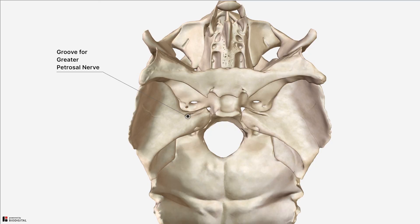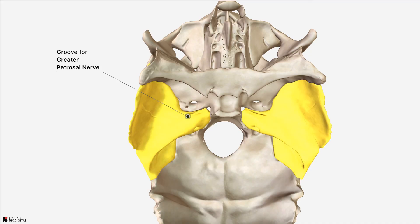Extending laterally and posteriorly from the foramen lacerum is this groove on the superior surface of the petrous part of the temporal bone, which is the groove for the greater petrosal nerve, which is a branch of the facial nerve. There is also a shallower groove for the lesser petrosal nerve, just anterior to this, but it's not visualised well on this model. We will learn more about the intricate internal anatomy of the temporal bone in tutorials on the middle and inner ear structures.